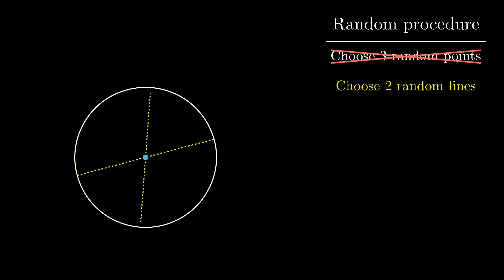In this case, rather than thinking about choosing three points randomly, start by saying choose two random lines that pass through the circle's center. For each line there's two possible points that it could correspond to, so just flip a coin for each one to choose which of the endpoints is going to be p1, and likewise for the other which endpoint is going to be p2.